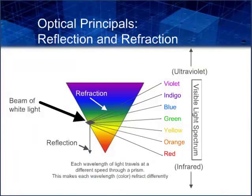Light changes speed as it moves from one medium to another — for example, from air into the glass of a prism. The refractive index of a medium varies with the wavelength or color of the light used, a phenomenon known as dispersion. This causes light of different colors to be refracted differently and to leave the prism at different angles, creating an effect similar to a rainbow. This effect can be used to separate a beam of white light into its constituent spectrum of colors.